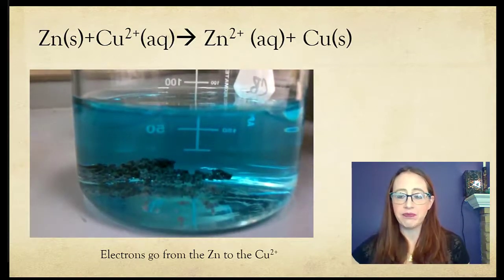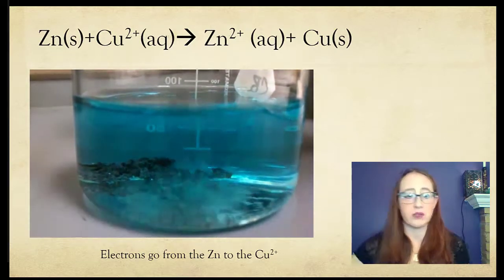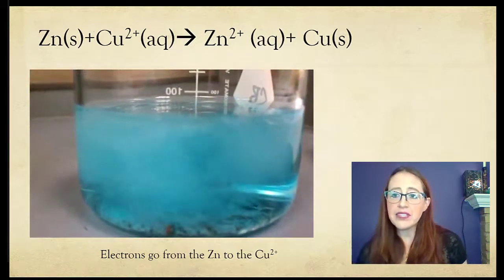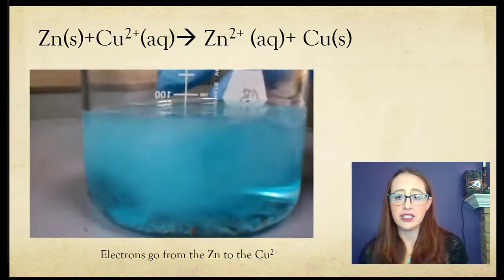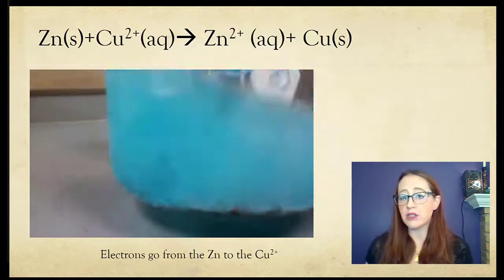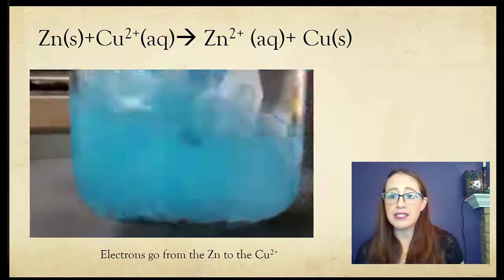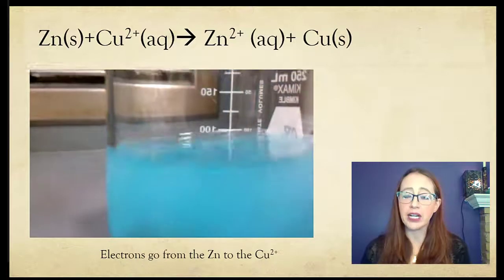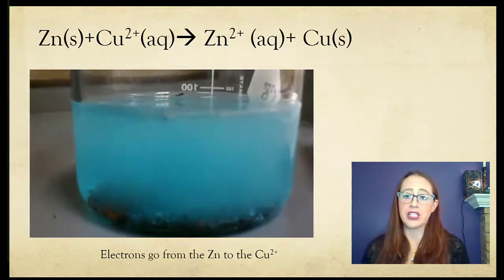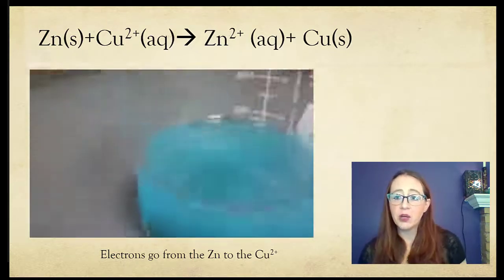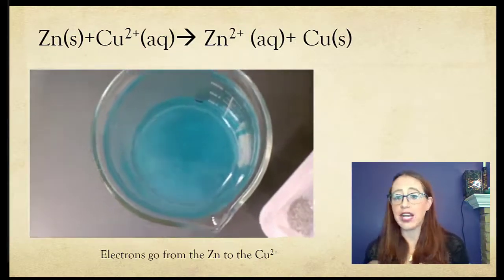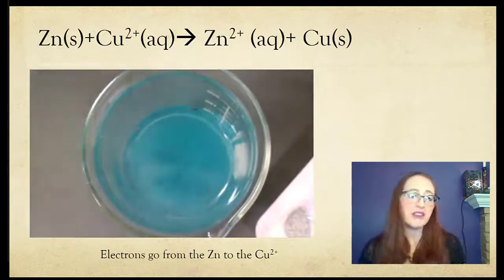Here we have a redox reaction that isn't really set up to allow the electrons to do any sort of work, but it is fun to watch. The zinc and the copper are exchanging electrons. From the reaction written above, we see that zinc goes from a zero to a plus two oxidation state, which means it loses electrons and gives them to the copper, which is going from plus two to zero. In this chapter, we'll learn how to talk about these reactions involving electron exchange, the terminology for referring to them, how to balance them accounting for electron exchange, and how all of this impacts us daily.